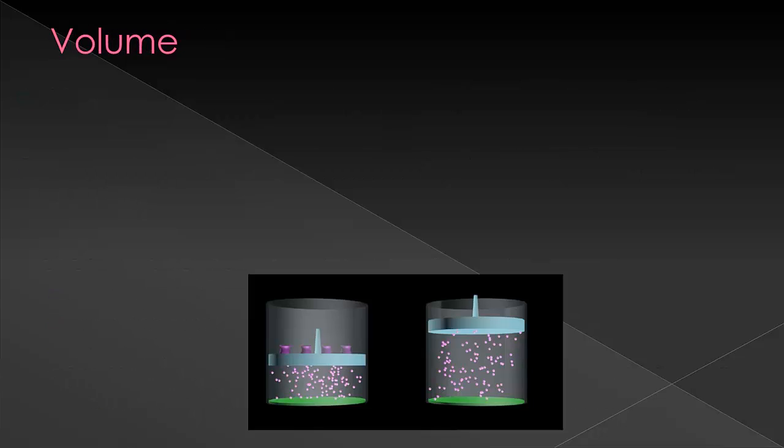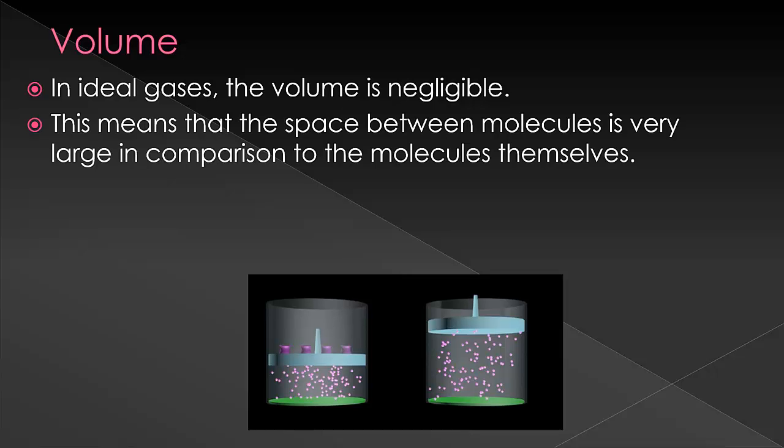Now, let's talk about the volume issue here. In ideal gases, volume is negligible. What this really means is that you have so much space in between the molecules that that space is very large in comparison to the space of the actual molecule. So, the molecules are taking up very little space. When is that not going to be true?